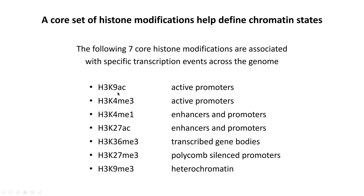The acetylation of lysine 9 on H3 and the trimethylation of lysine 4 on H3 are closely associated with the activity of gene promoters. The monomethylation of lysine 4 and the acetylation of lysine 27 are mostly associated with enhancer elements, but you also get some signal at promoters. Unfortunately, there aren't good enhancer-specific marks at the moment, but by comparing these marks with gene annotations and transcription start sites, you can determine whether you're looking at an active enhancer or a promoter. The trimethylation of lysine 36 is associated with transcription over gene bodies, and trimethylation of lysine 27 or lysine 9 is associated with polycomb or heterochromatin silencing.